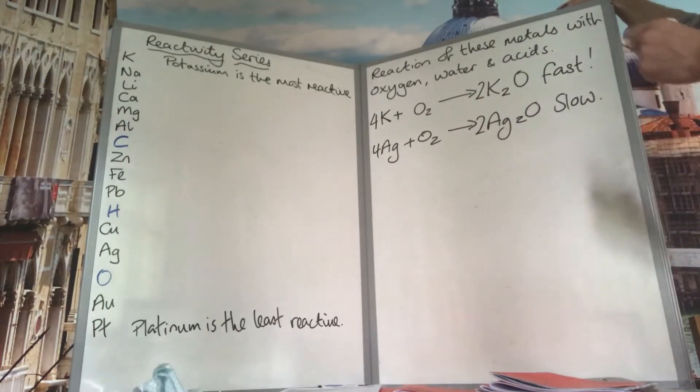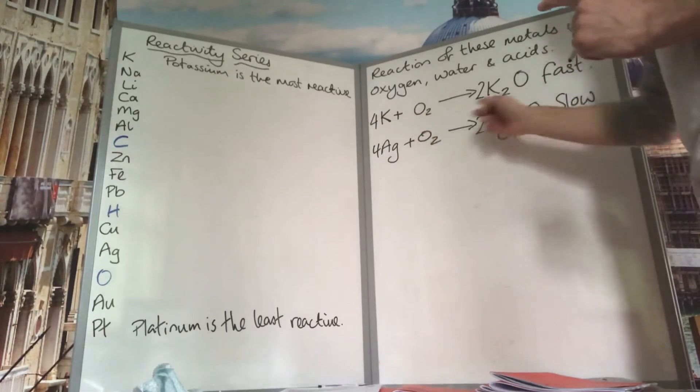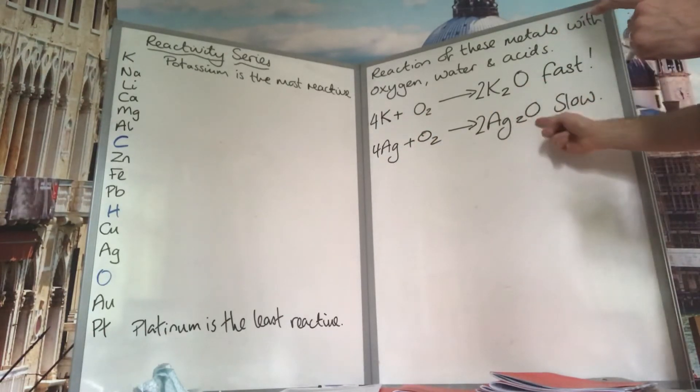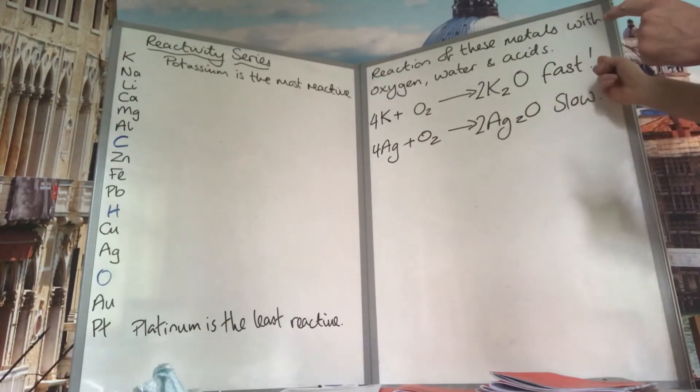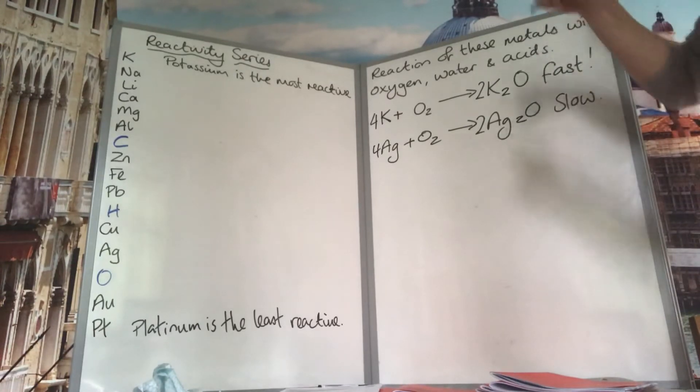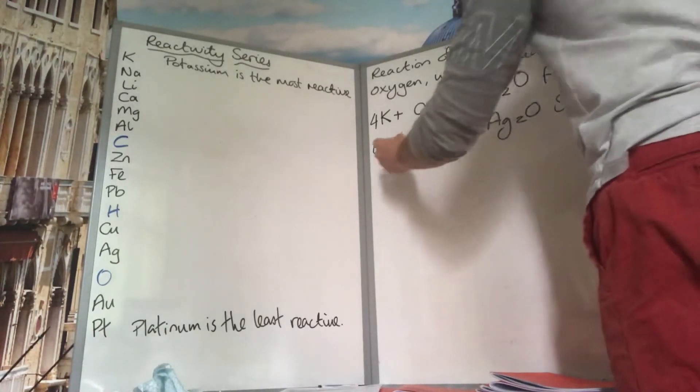So when these metals react with oxygen, they produce the metal oxide. And we know whether it's fast or slow by the distance between the metal and oxygen in the reactivity series.